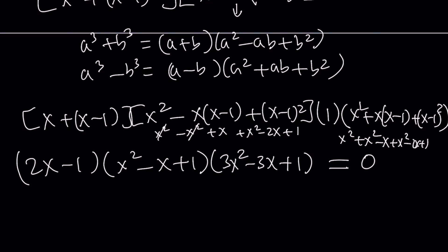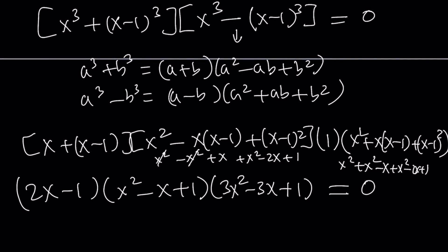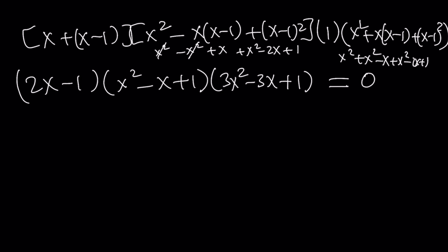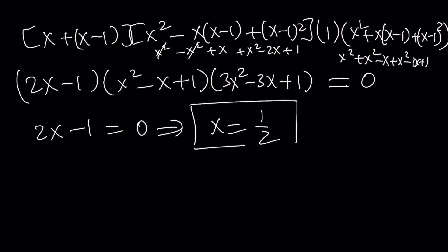The advantage of factoring first as a difference of two squares and then using sum and difference of two cubes is that we get quadratics — no need to deal with a cubic. Now since we have three factors, we set each equal to 0. This is expected to give a quintic since x to the 6th power cancels out. Setting 2x minus 1 equal to 0 gives us x equals 1 half, which is our first solution.